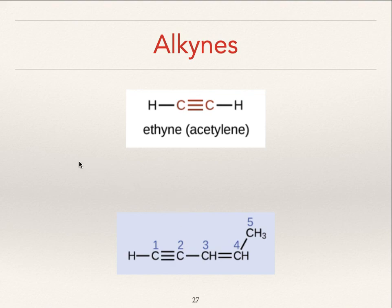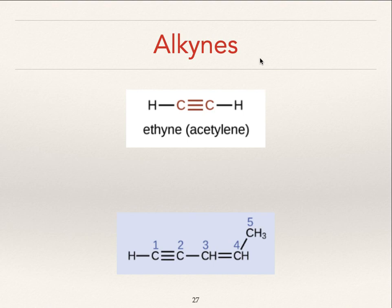I think that's where we'll stop for now — alkenes, alkynes. One final thing: the generic formula for an alkane is CnH2n+2. The generic formula for an alkene is CnH2n. The generic formula for an alkyne is CnH2n-2.